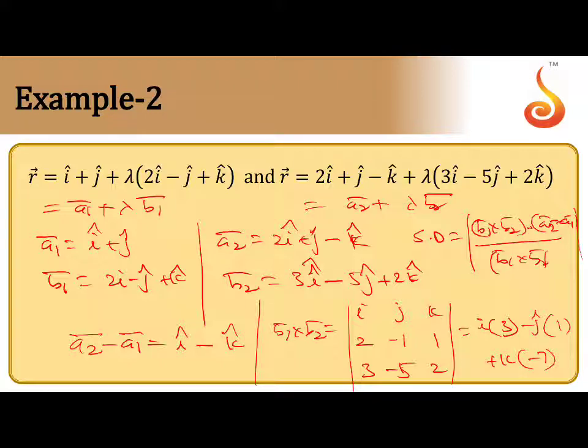ā₂ - ā₁ is î - k̂, b̄₁ × b̄₂ is 3î - ĵ - 7k̂.